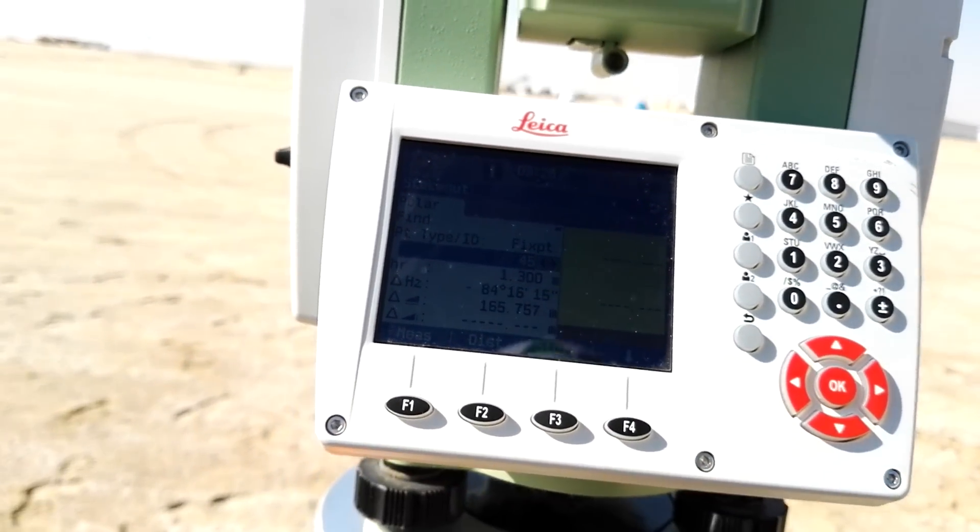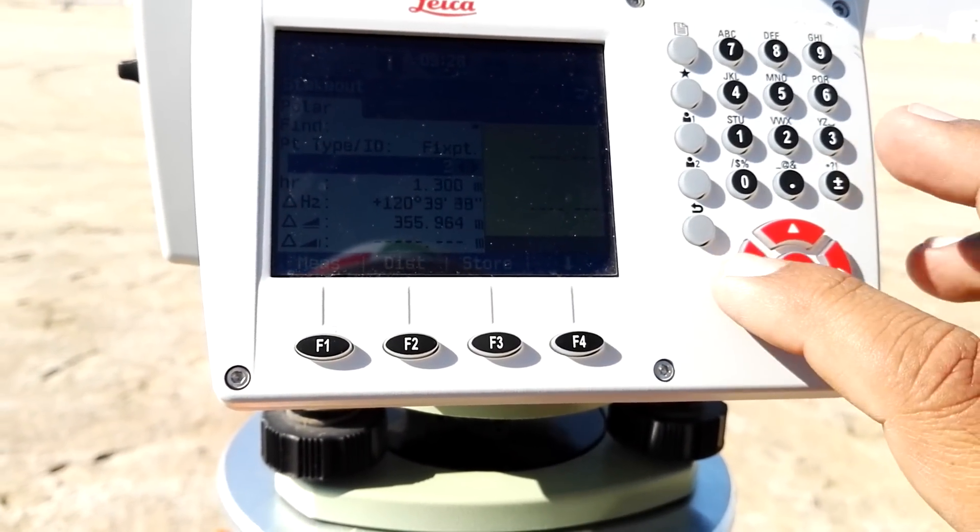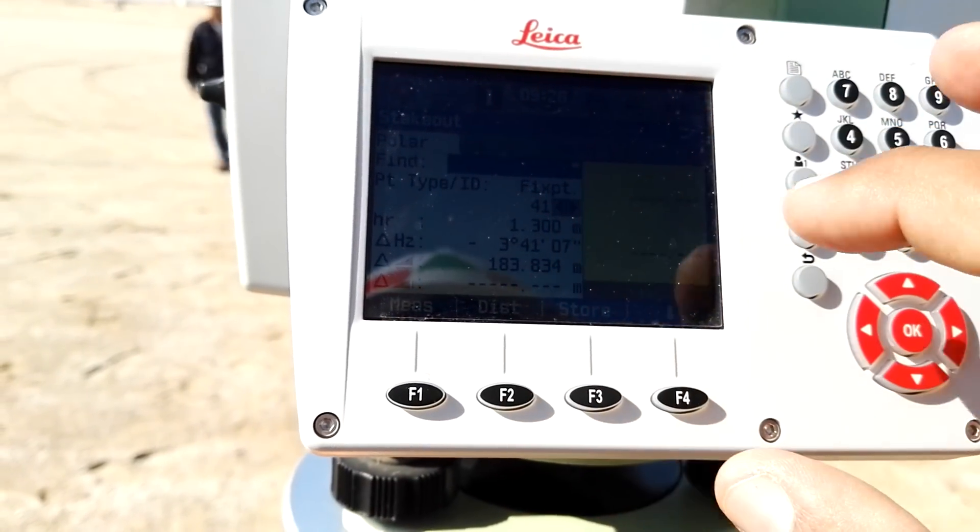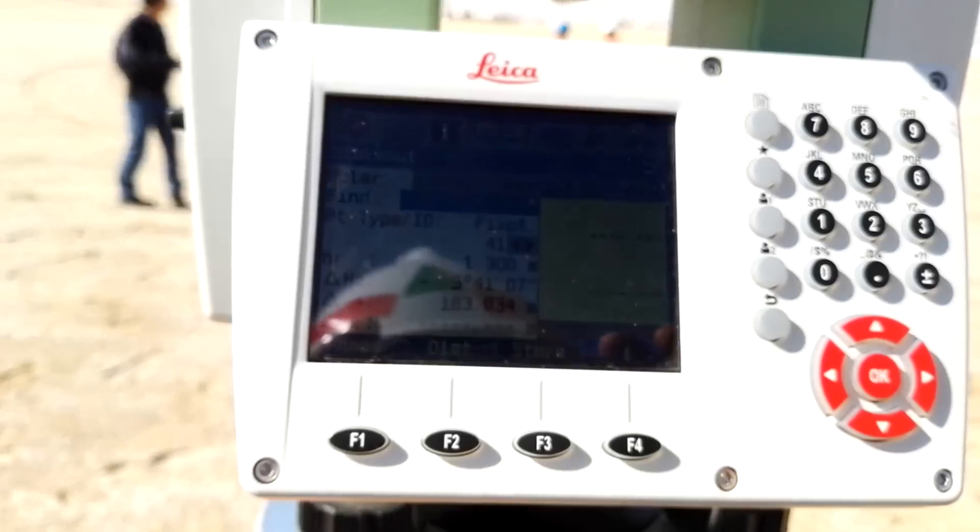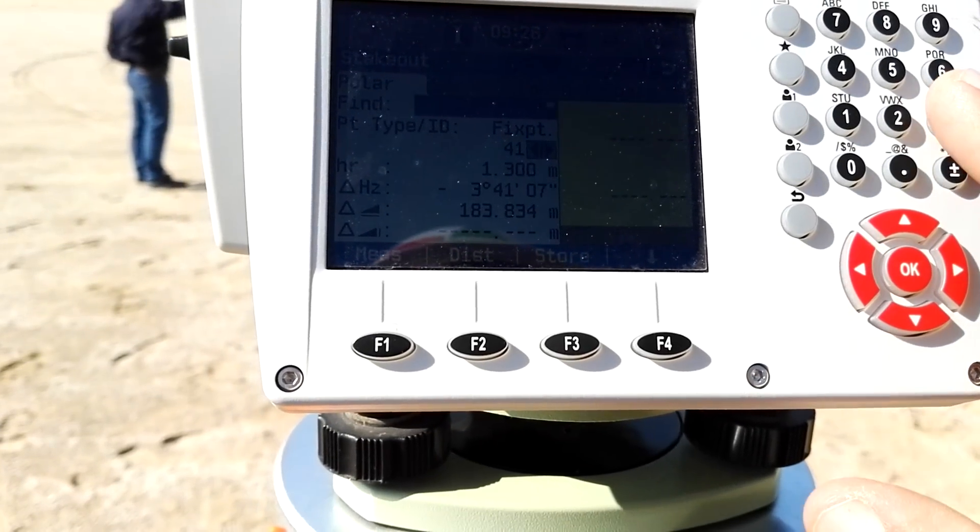So I will mark the point number 33. You can set with this key 33 or otherwise you go to the star position and then you can write the number of points, for example, 33 and then OK.